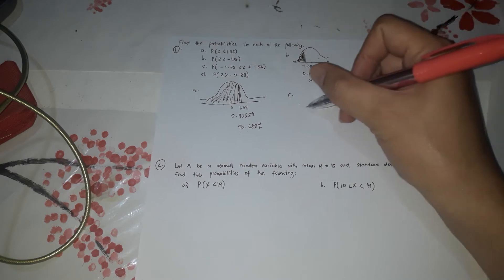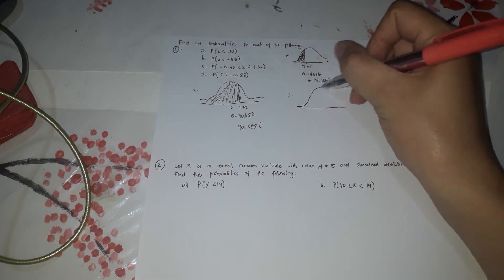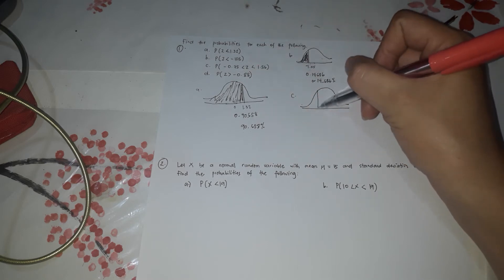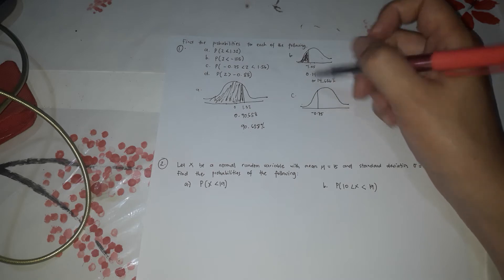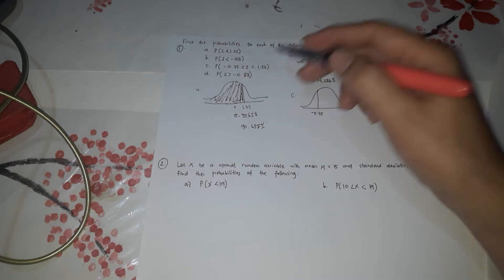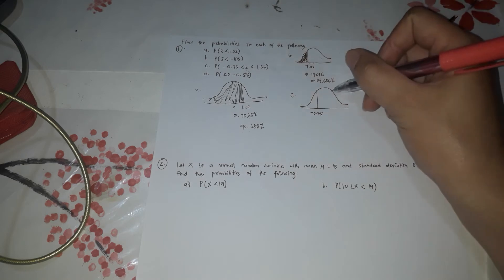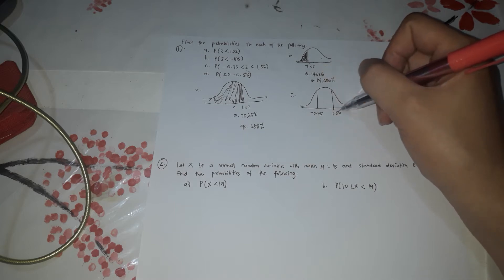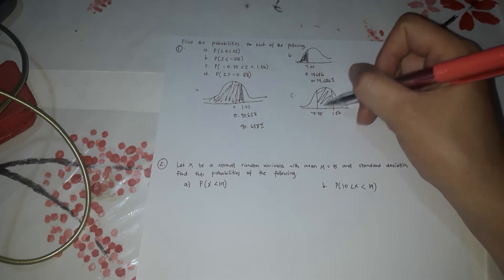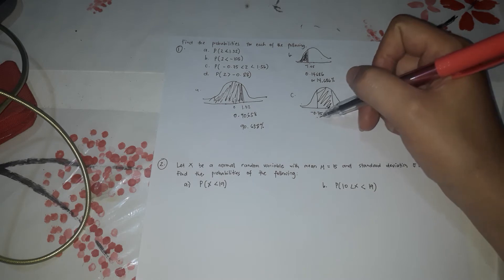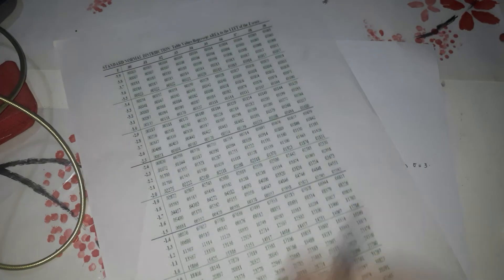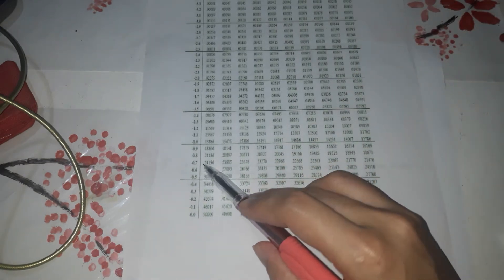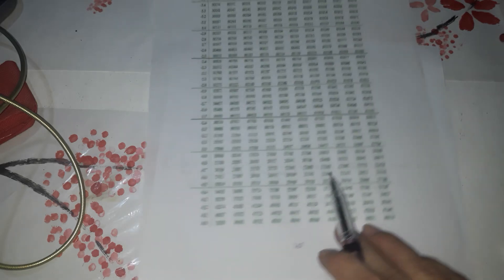Letter C, draw first the normal curve. So it's between negative 0.75 and 1.56. When it's in the middle, it means between. So this is 1.56. So this is 0. So negative on the left. Positive on the right. So between. So first we'll get the negative 0.75.